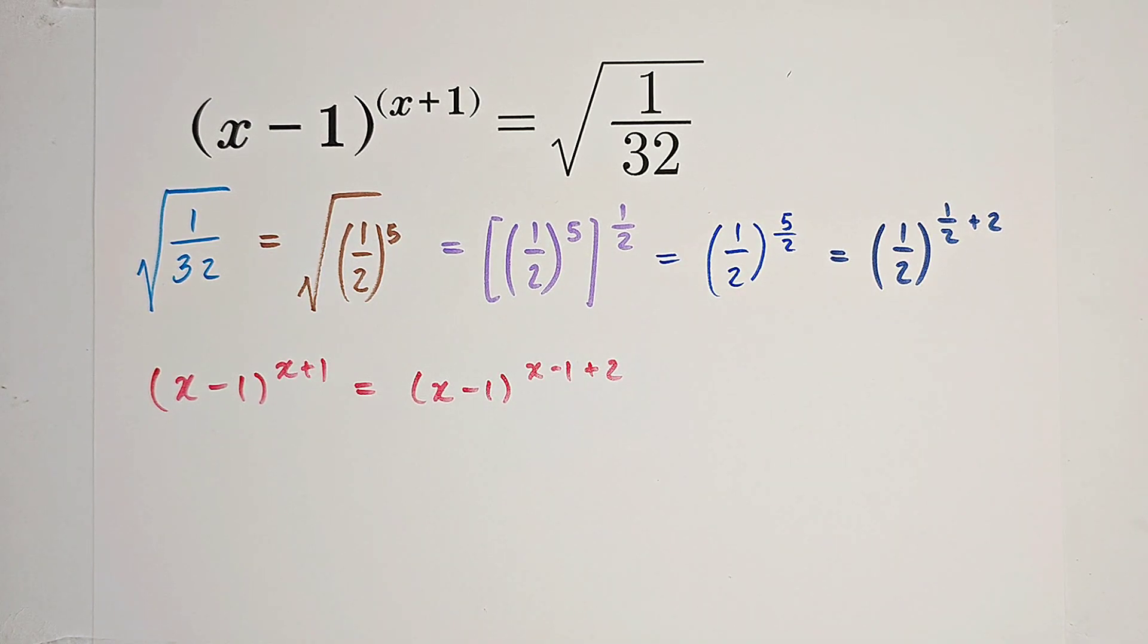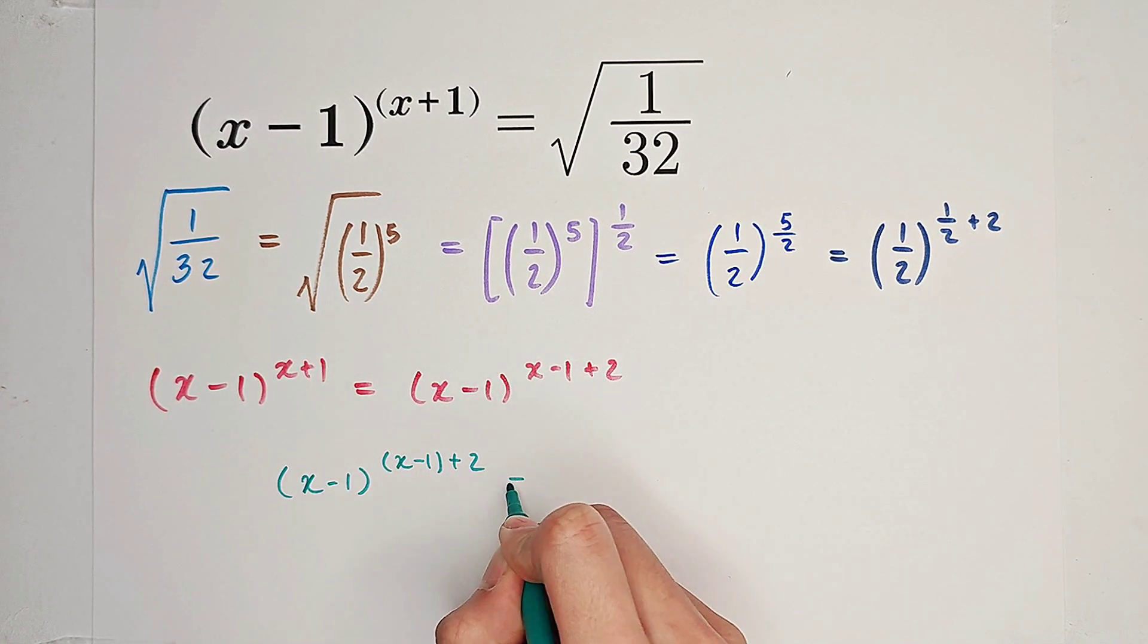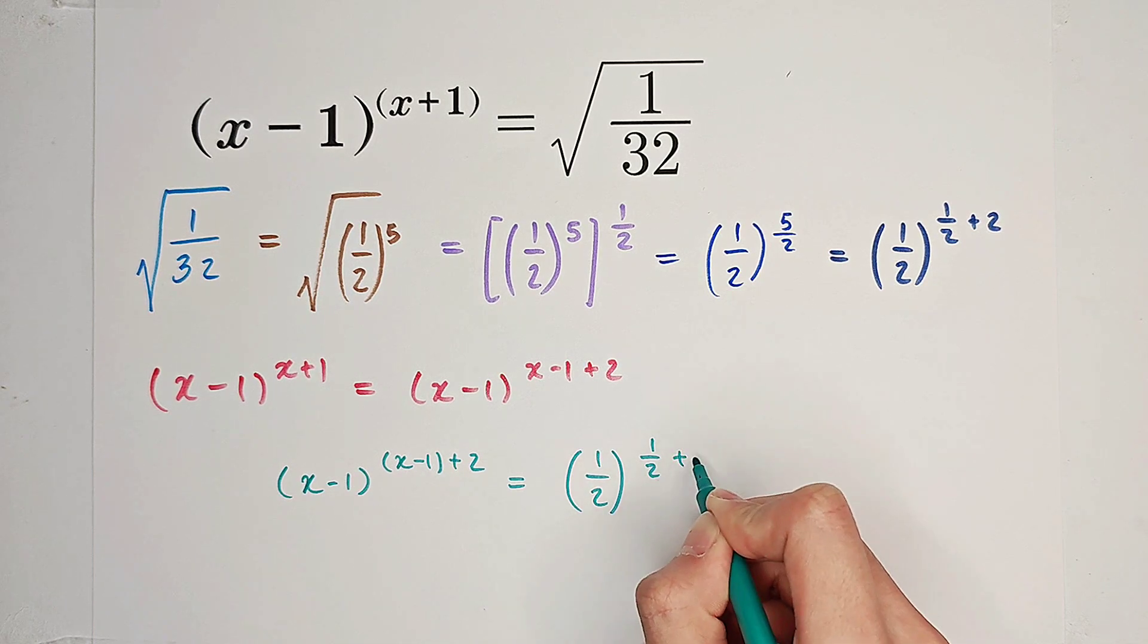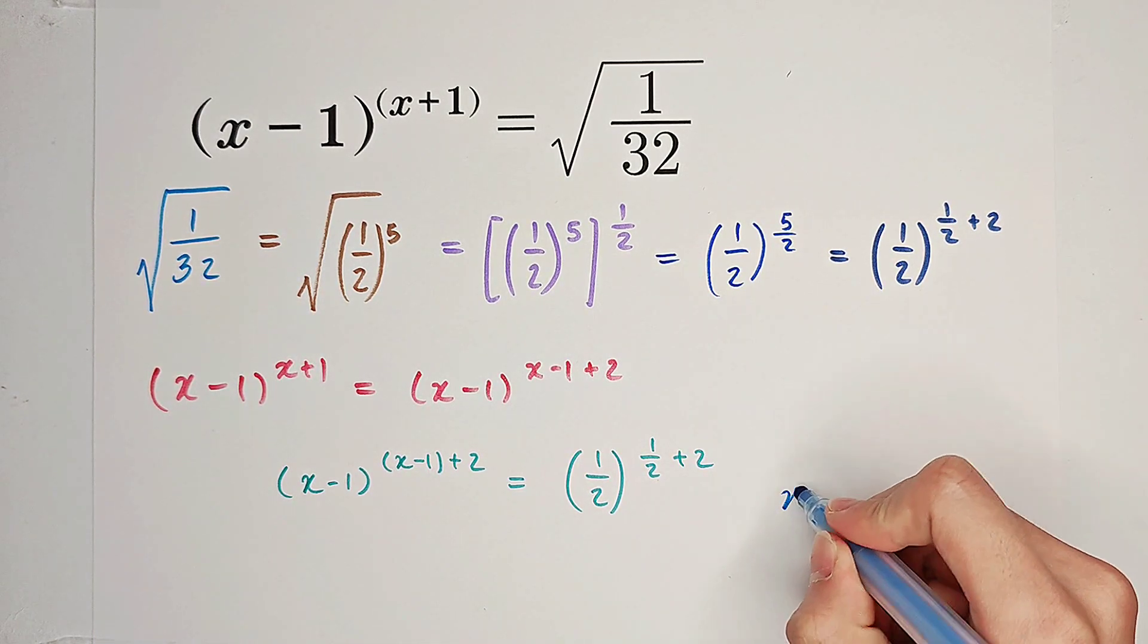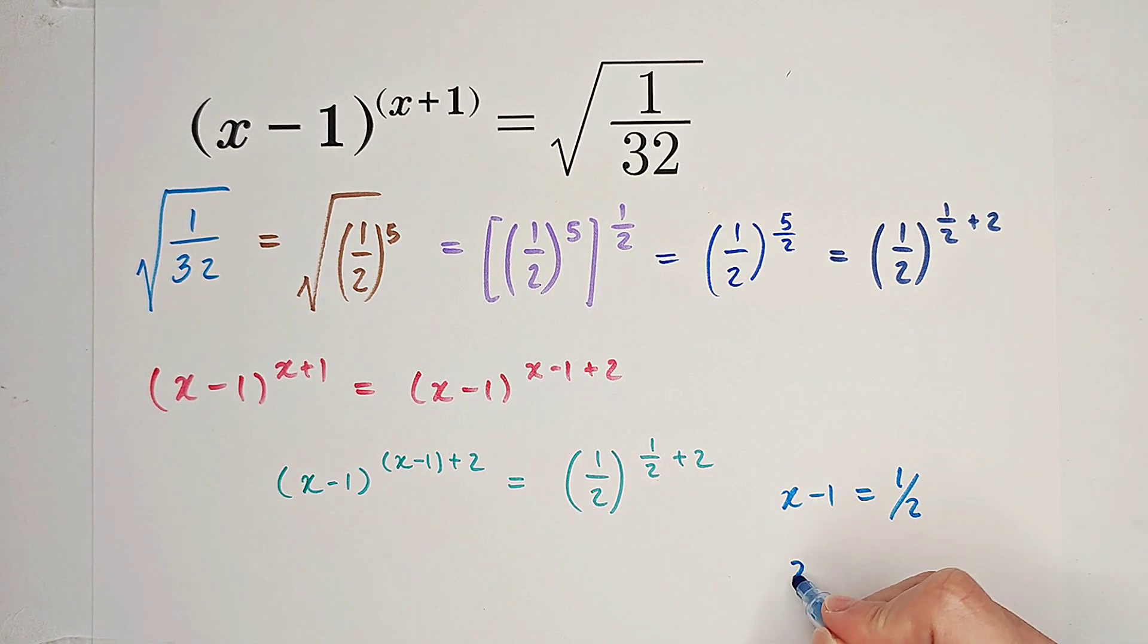Now, you can see that on the left-hand side, we have x minus 1 all to the power of x minus 1 plus 2 equals the right-hand side 1 over 2 to the power of 1 over 2 plus 2. So, what you can get is x minus 1 equals 1 over 2 and x is 3 over 2.